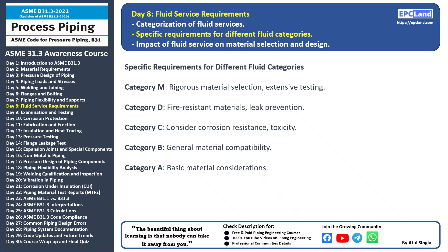Category D: flammable fluids require fire-resistant materials to prevent ignition — leak prevention is crucial to avoid fire-related incidents. Category C: non-flammable and non-toxic fluids need consideration for corrosion resistance and toxicity; materials must be compatible with the fluid's properties. Category B: other non-flammable fluids have general material compatibility requirements — materials must be able to handle the fluid's characteristics without degradation. Category A: safe fluids have basic material considerations; materials still need to be suitable for the fluid's environment.